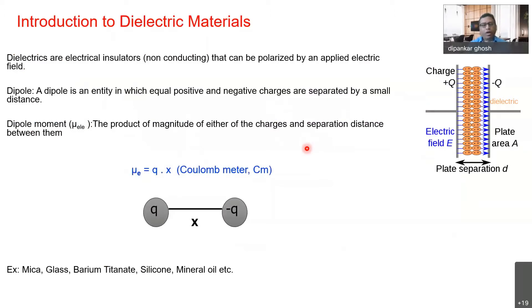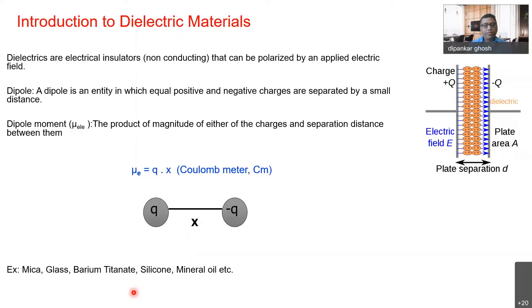Now I'll give a brief introduction to dielectric materials for those who are new. Dielectrics are electrical insulators — they are electrically non-conducting and can be polarized by an applied electric field. In some dielectrics, there is already a permanent dipole. You have two charges, plus Q and minus Q, separated by a finite distance D. When you apply a field, you have charge polarization and the presence of dipoles — pairs of equal and opposite charges separated by a small distance. The dipole moment is the product of the charge and the distance. Common industrial examples of dielectrics include mica, glass, barium titanate, silicone, and mineral oil.